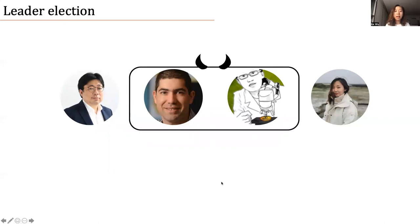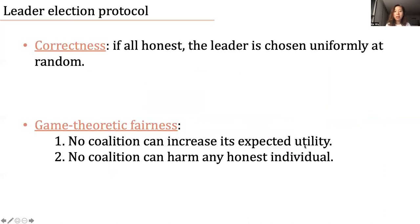The winner gains utility one and it takes all. The others just gain utility zero. So some of the players, say Ilang and Ilang, they may form a coalition and they want to bias the output towards their favor. In leader elections, we also care about game theoretic fairness. We want to guarantee that no coalition can increase its expected utility and no coalition can harm any honest individual.